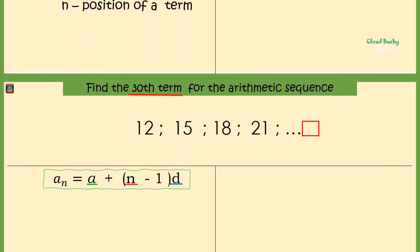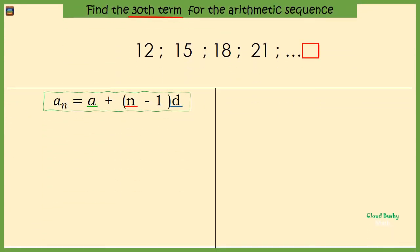So we have four terms given. Let's label them a₁, a₂, a₃, and a₄. The first term in the sequence is 12. For this sequence we want to find the thirtieth term, that is the term at position 30, so n is 30.